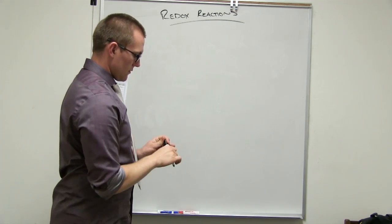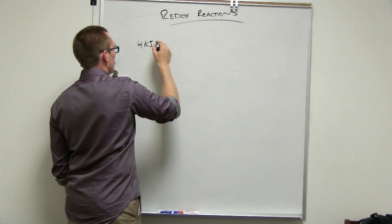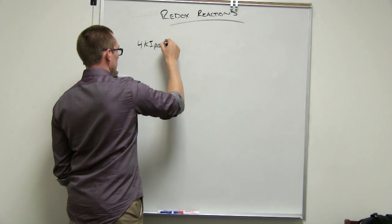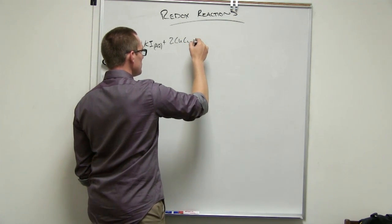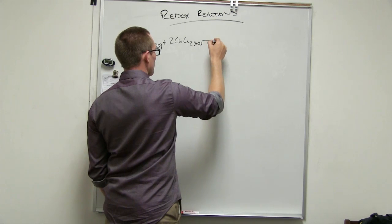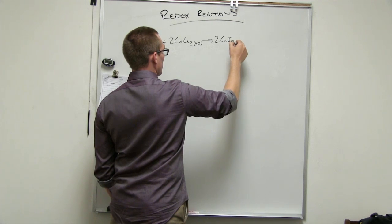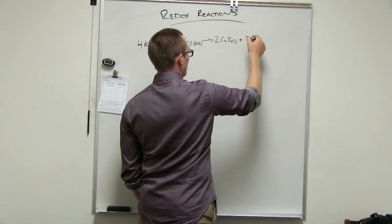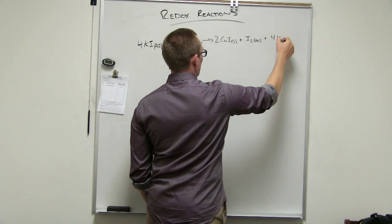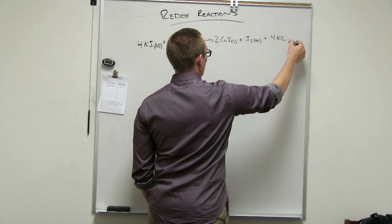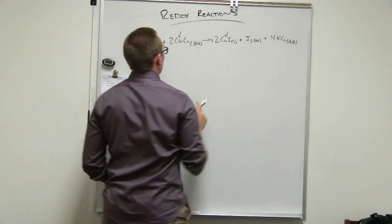So the next one is 4KI aqueous plus 2CuCl2, which is aqueous. And that goes to 2CuI, which is solid, plus I2 aqueous, plus 4KCl, which is aqueous. Alright. It's asking about the coppers. Okay. Cool.